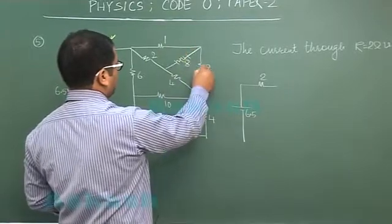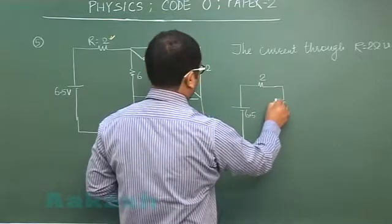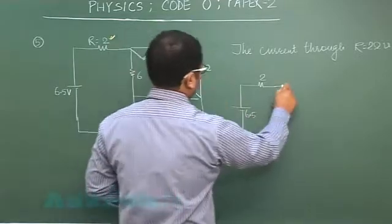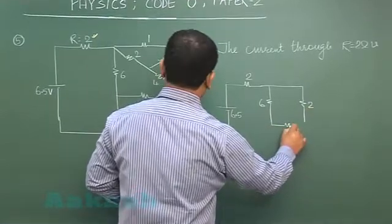and here comes ten. This is twelve, this is four. Again you get another balanced Wheatstone where this by this is this by this, so this can again be eliminated.